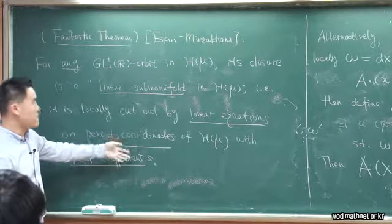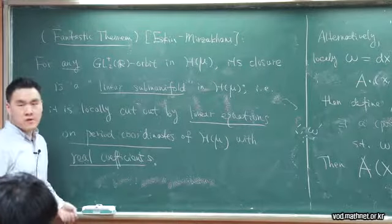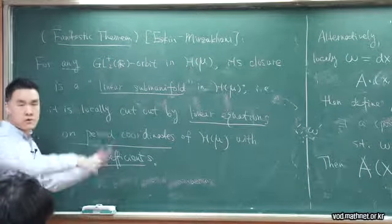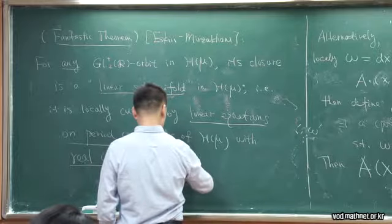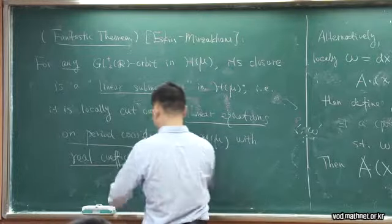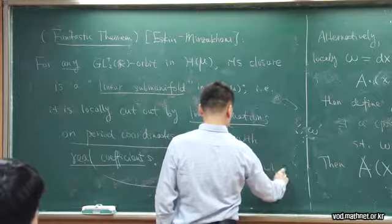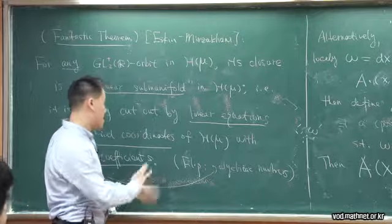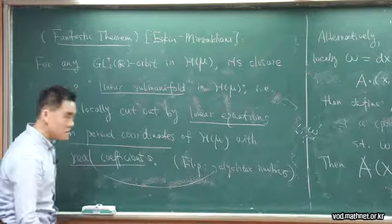There were also some subsequent follow-up works. For number theorists in the audience, these real coefficients are not actually only real numbers — they are algebraic in nature, some kind of algebraic number. There is even some follow-up work by Simon Filip showing these real coefficients are actually algebraic numbers. In particular, this tells you that GL₂(ℝ) orbit closures are, in principle, defined over a number field, and there is some Hodge theory and variation of Hodge structure coming into play.